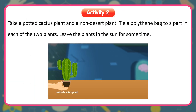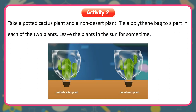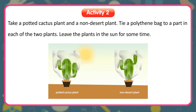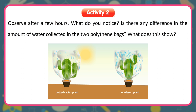Activity: Take a potted cactus plant and a non-desert plant. Tie a polythene bag to a part of each plant and leave them in the sun for some time. Observe after a few hours — is there any difference in the amount of water collected in the two polythene bags? What does this show?